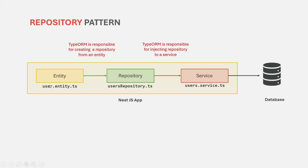When naming your entity, you should not use a plural term. For example, I have named this entity as user.entity.ts. But for the repository it is users repository, and for the service it is users service. When you create an entity, you use a singular term, not a plural term. The reason behind that is when this entity is used to create a table in the database, an extra 's' will be automatically added to the term. So with this entity, a users table will be created in the database. If you already specify a plural term like 'users', the table created will have two s's at the end, which you want to avoid.